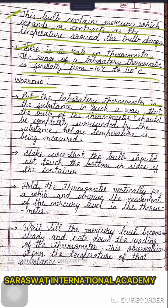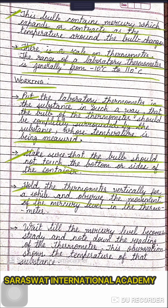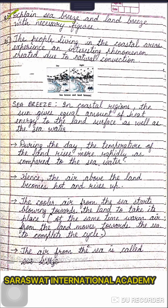Working of the laboratory thermometer: put the thermometer in the substance such that the bulb is completely surrounded by the substance whose temperature is to be measured. Make sure the bulb should not touch the bottom or sides of the container. Hold the thermometer vertically for a while and observe the movement of the mercury level. Wait till the mercury level becomes steady and note down the reading. This observation shows the temperature of that substance.